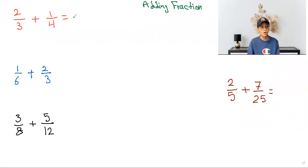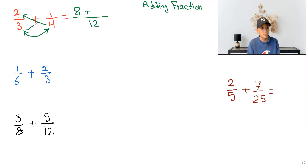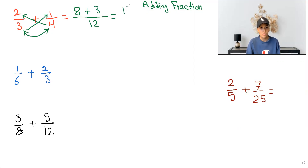So the first thing we start with is putting a long line, and then we do 3 times 4, which will give you 12 as your common denominator that goes below the line. And then we do 4 times 2, which will give you 8, and then you put a plus sign right beside the 8. And then we do 3 times 1, which will give you 3, and then that will equal 11 over 12.